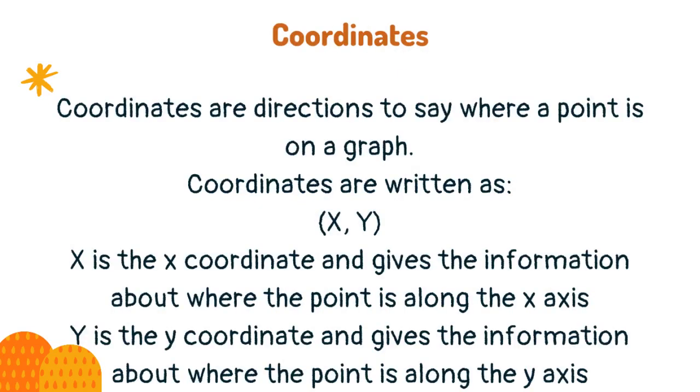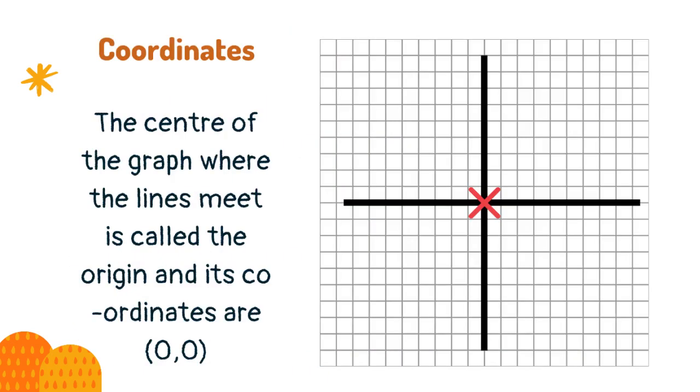Coordinates are directions to say where a point is on a graph. x is the x-coordinate and gives the information about where the point is along the x-axis. y is the y-coordinate and gives the information about where the point is along the y-axis. The center of the graph where the lines meet is called the origin and its coordinates are 0, 0.